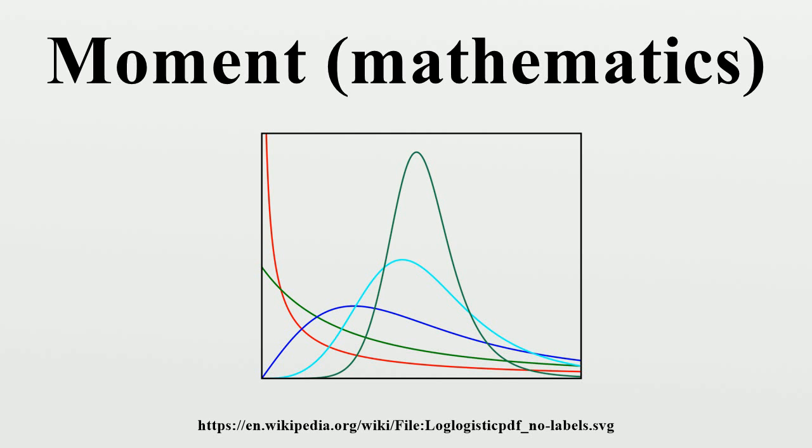If the nth moment about any point exists, so does the kth moment about every point for k less than n. The 0th moment of any probability density function is 1, since the area under any probability density function must be equal to 1. The first raw moment is the mean. The second central moment is the variance.